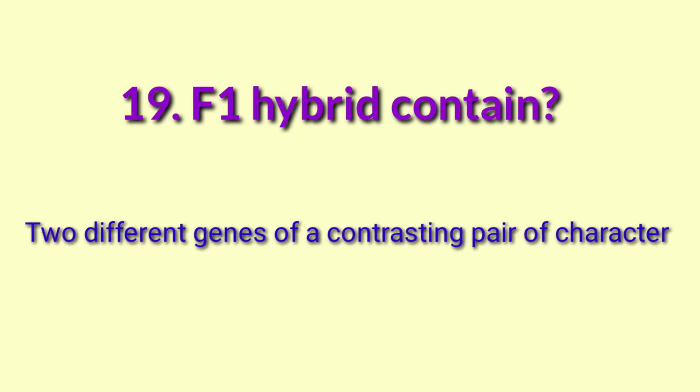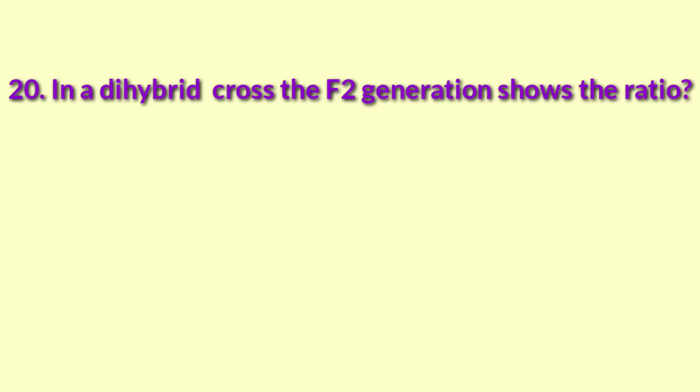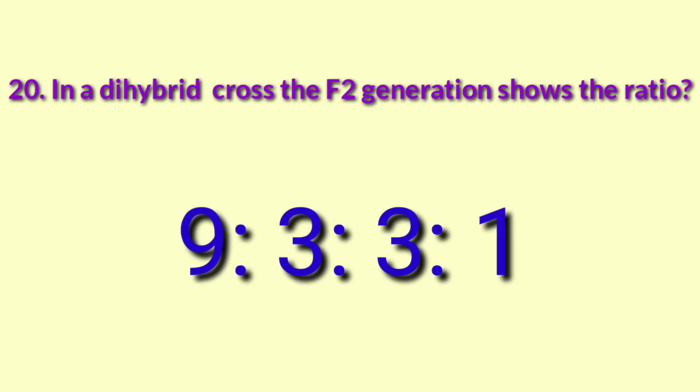F1 hybrid contains two different genes of a contrasting pair of characters. In a dihybrid cross, the F2 generation shows a ratio of 9:3:3:1.